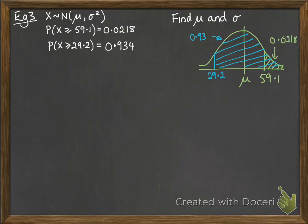And this other one, we're told, is 0.934. So let's get that first z value. That will be phi of z would be 1 minus 0.02198, so that's 0.9782. So we can find the value off the tables.